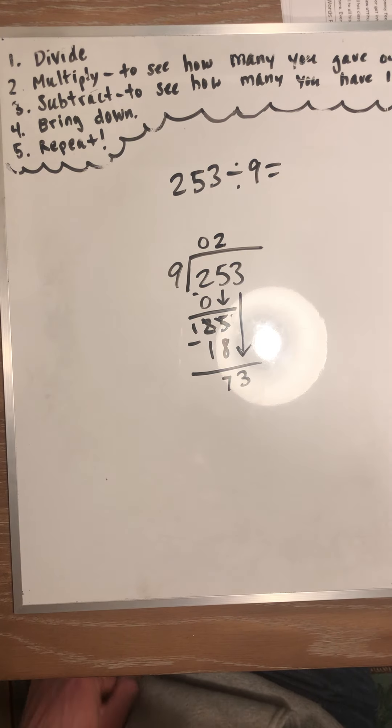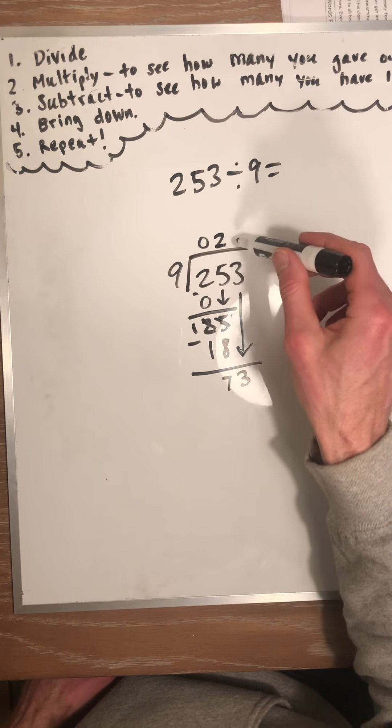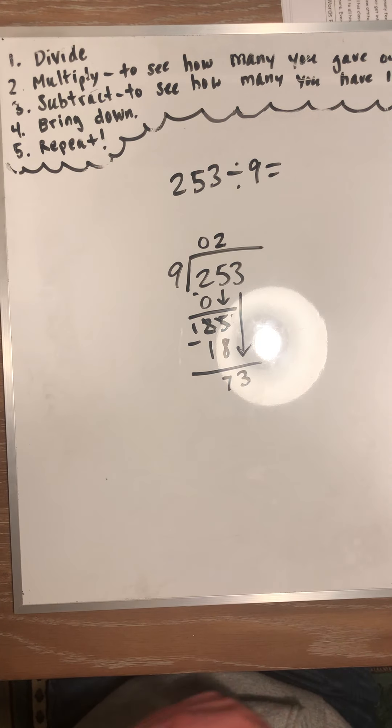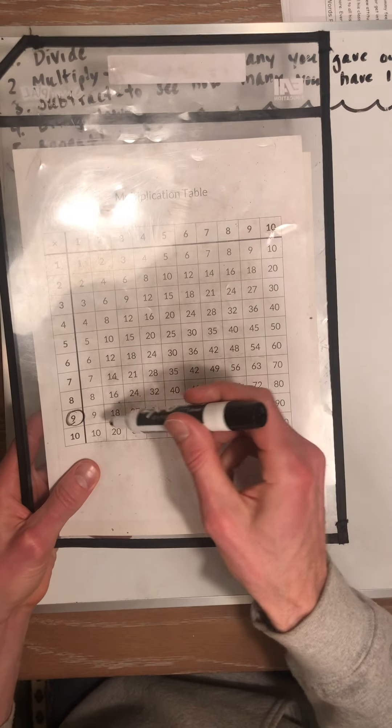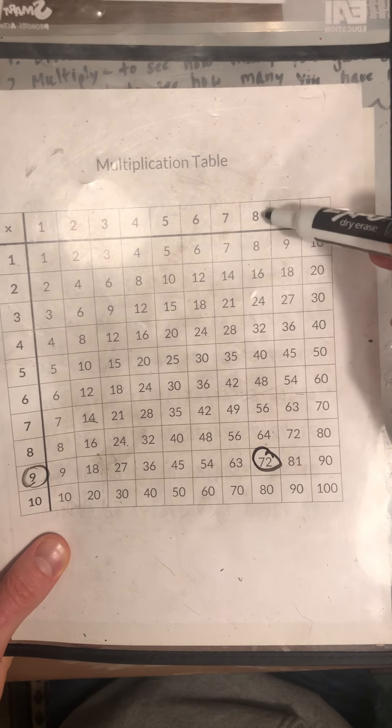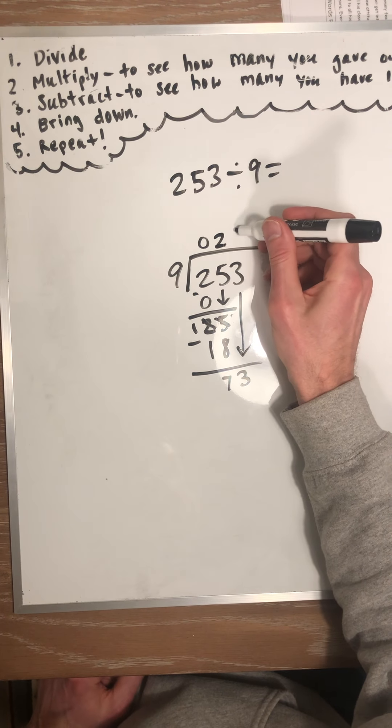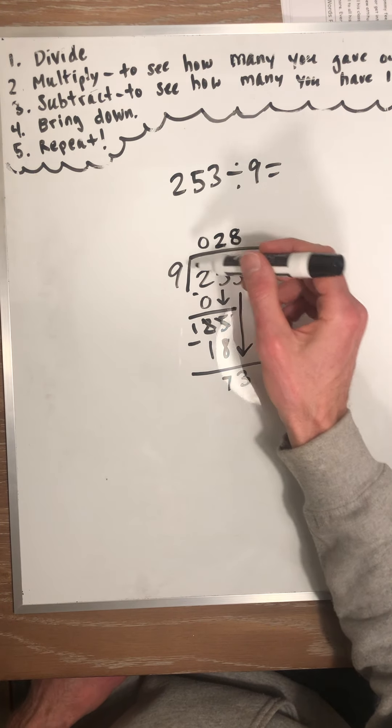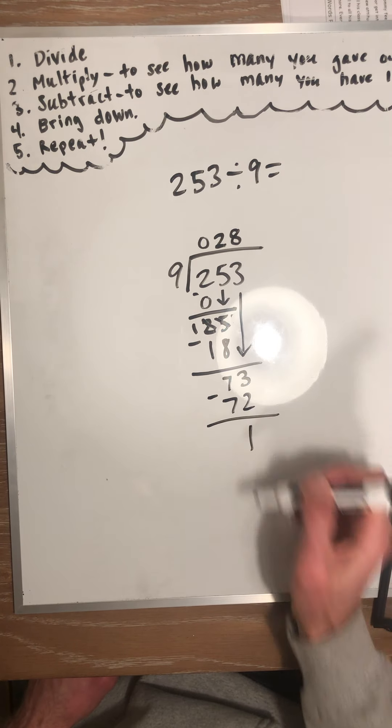Now, we give out the 73 ones. So, 9 times what equals 73? Well, how many 9s fit into 73? Anybody know offhand? Let's see. Let's find a number that's pretty close. Well, 72 is very close. 9 times 8 is 72. We're not going to get closer than that. So, 8. 8 times 9. Multiply back to see how many we gave out. Well, we gave out 72. Subtract to see how many we have left. 1.